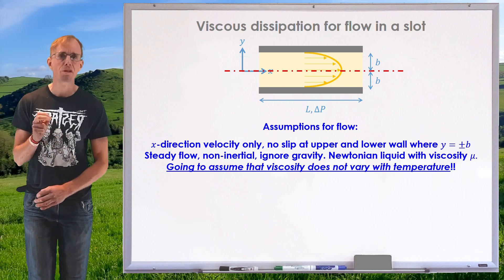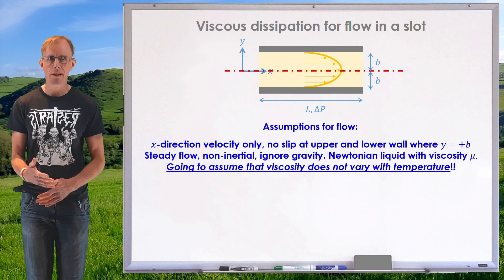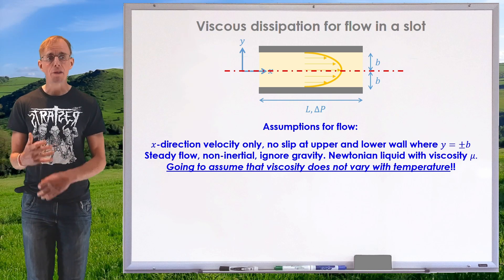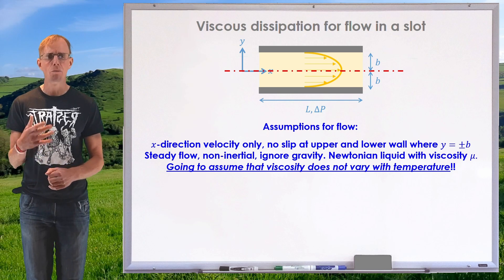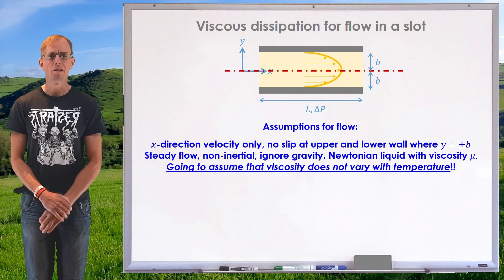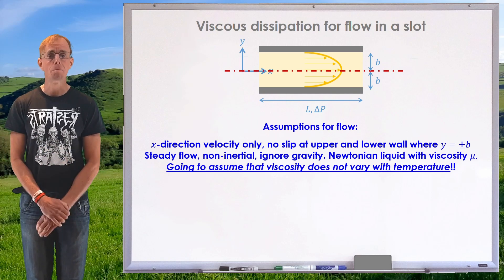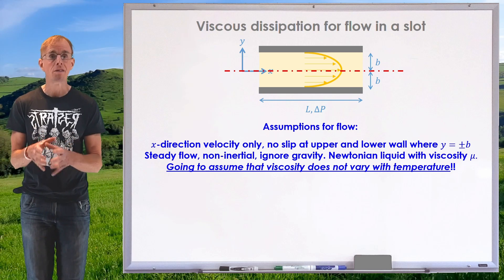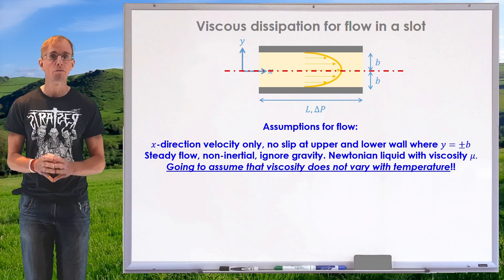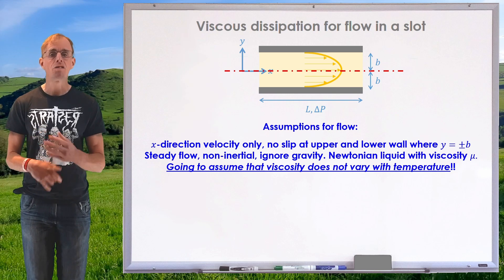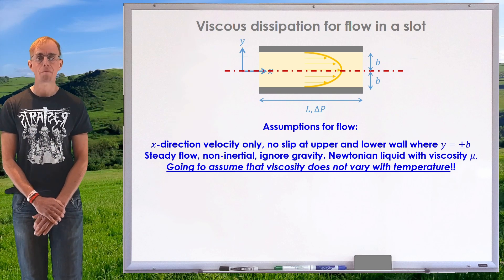I'm going to assume a Newtonian rheology that does not vary with temperature. That's a really big simplifying assumption, but if we think about what we're trying to achieve — an idealized solution to check numerical data — we can turn off that temperature dependence and see if this basic result has been achieved. The fact that viscosity doesn't vary with temperature doesn't lessen the usefulness of this result as a validation tool for a numerical solution.